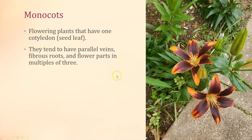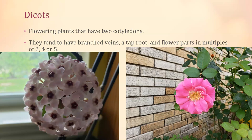Dicots are named because they have two cotyledons. They tend to have net venation — looking at the rose leaf here, there's a main vein running down the length of the leaf and other veins branching off it. That branched pattern is called net venation. A lot of dicots also have taproots.